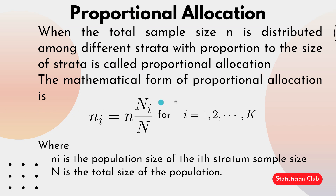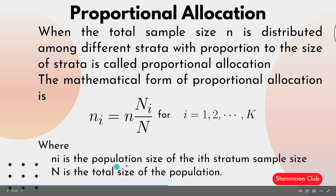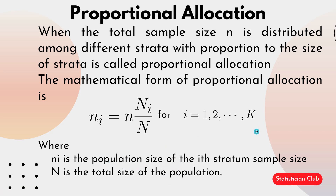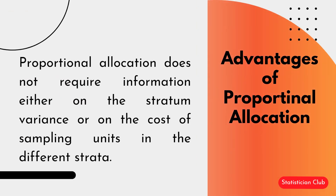The mathematical form of proportional allocation is n_i = n × N_i / N, where i varies from 1 to k. Here N_i is the population size of the i-th stratum and N is the total size of the population. Proportional allocation does not require information either on stratum variance or on the cost of sampling units in different strata.